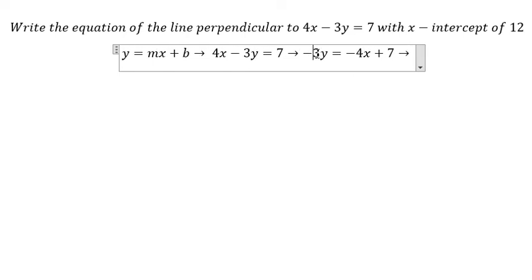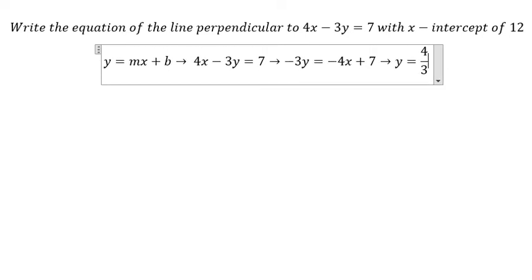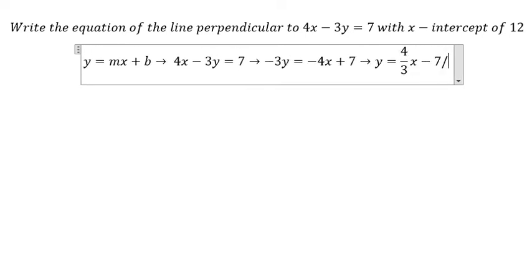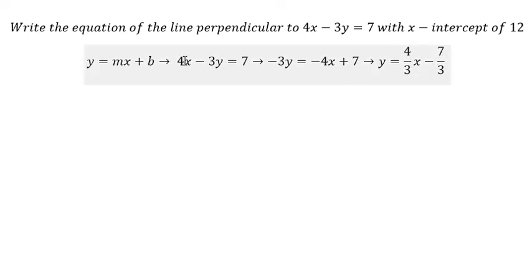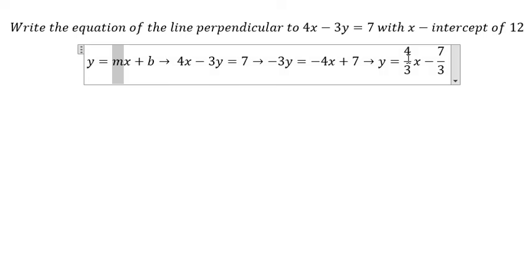Then we divide both sides by -3, and we see that m = 4/3 and b = -7/3.